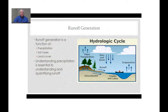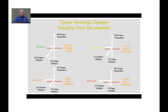Runoff generation is a function of a number of factors including precipitation, soil types and land cover, and all of these must be considered when estimating runoff generation. Whenever a parcel undergoes development and is transformed from the natural condition to developed conditions, a number of hydrologic changes occur.